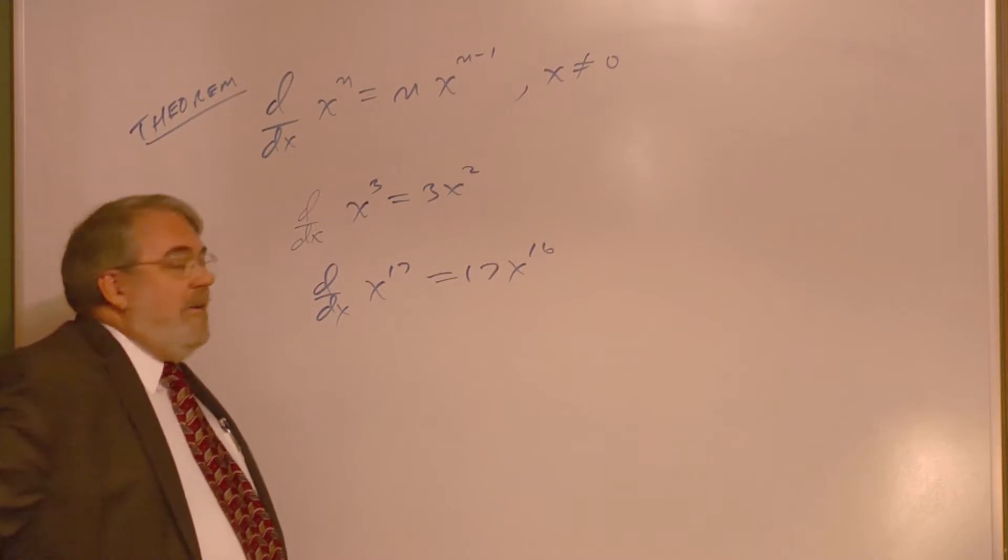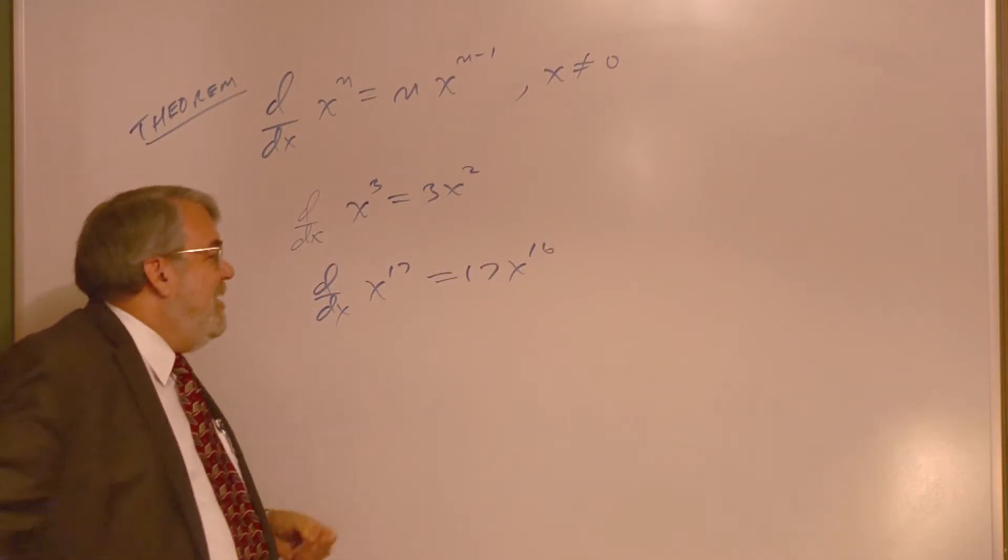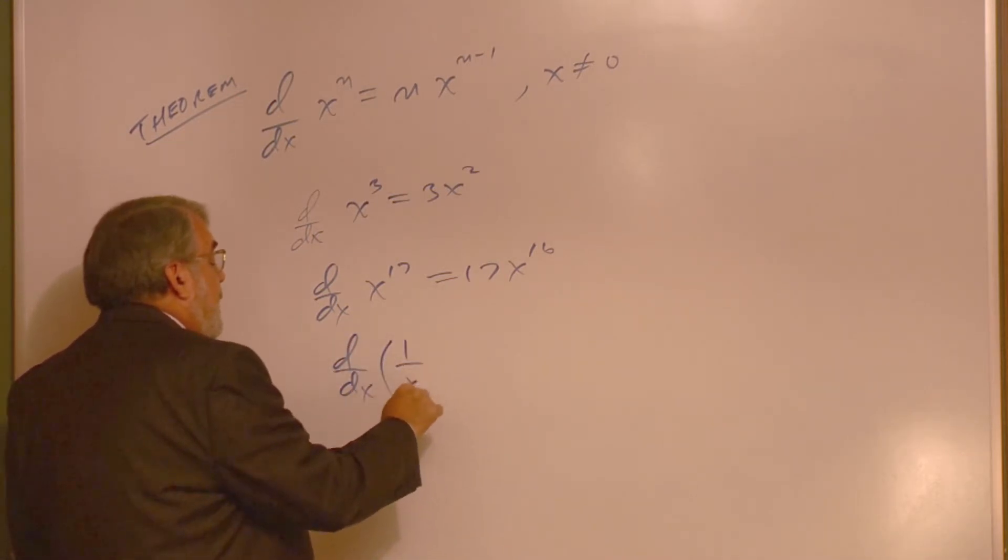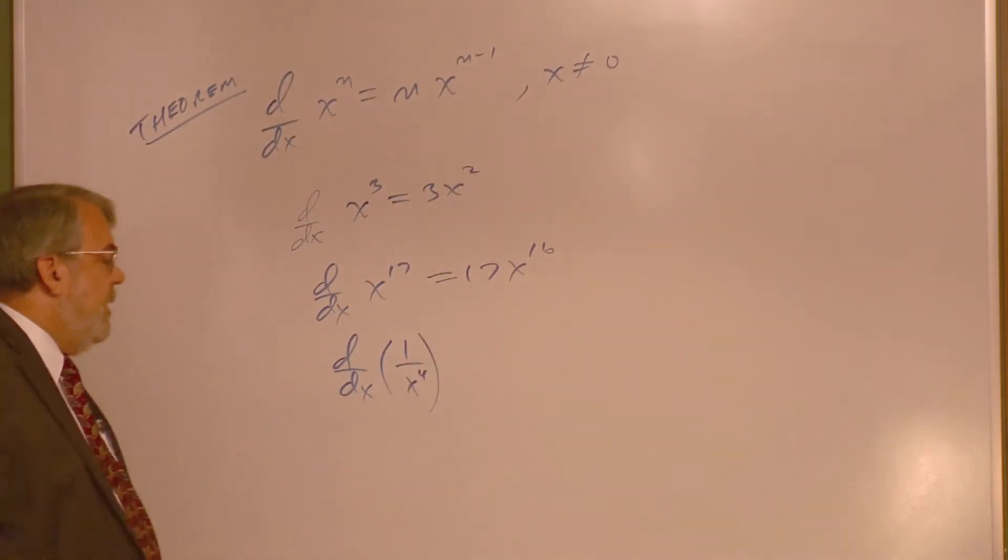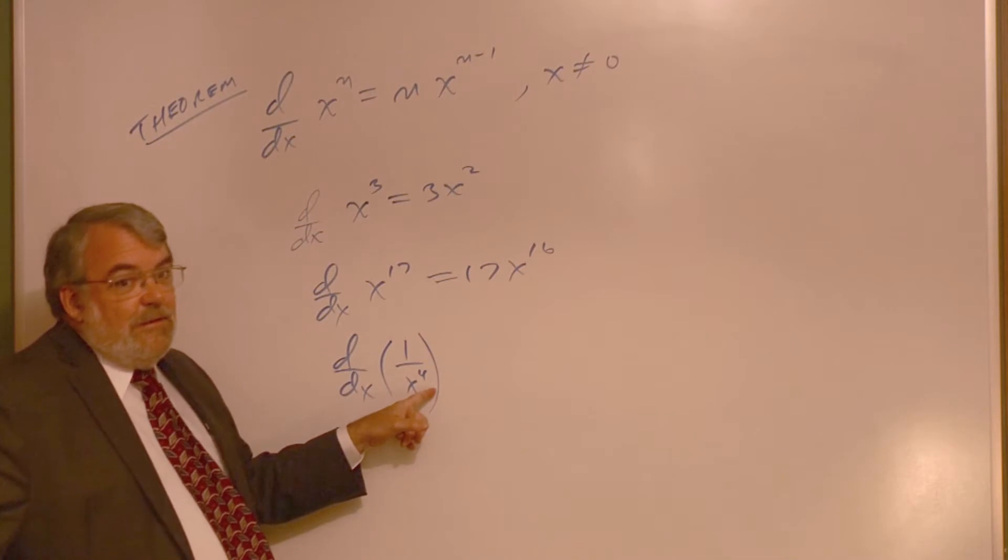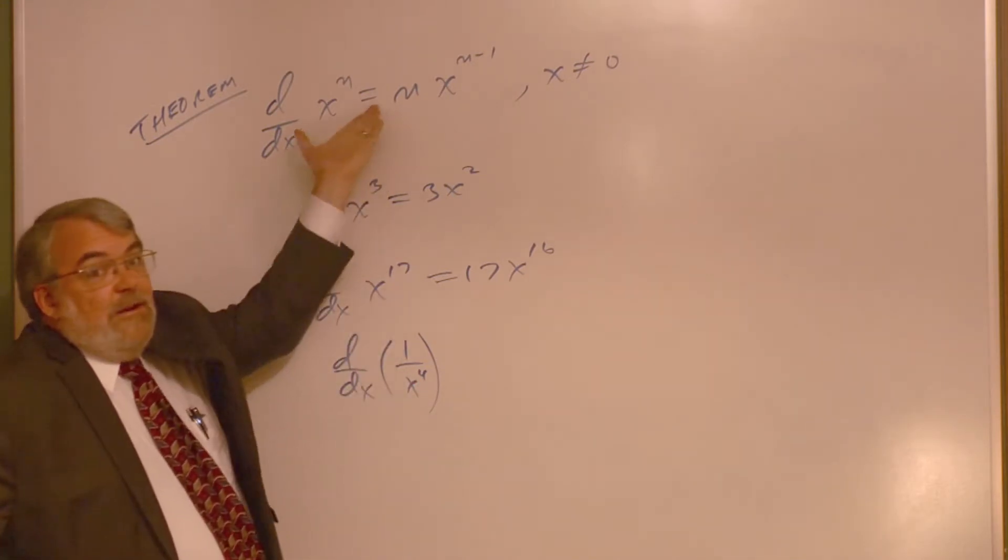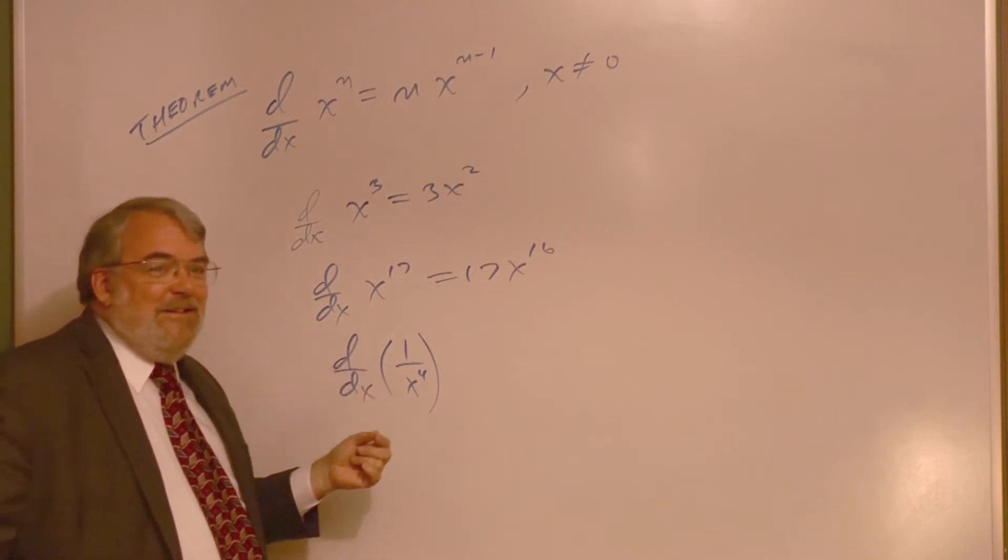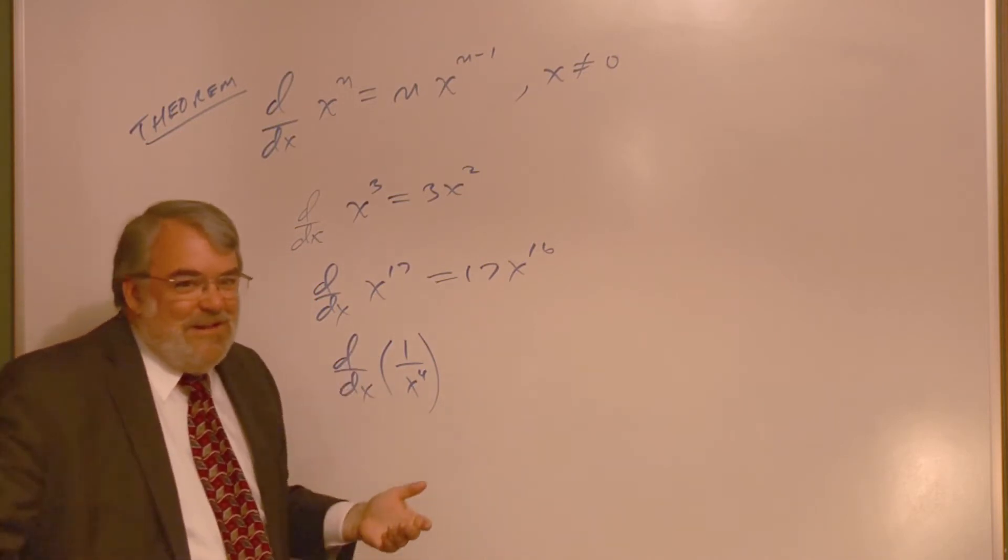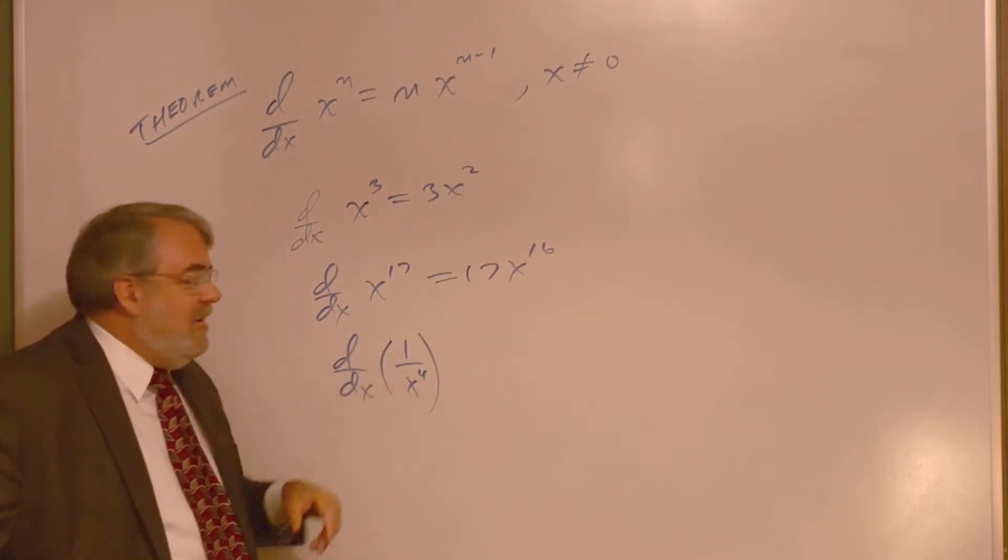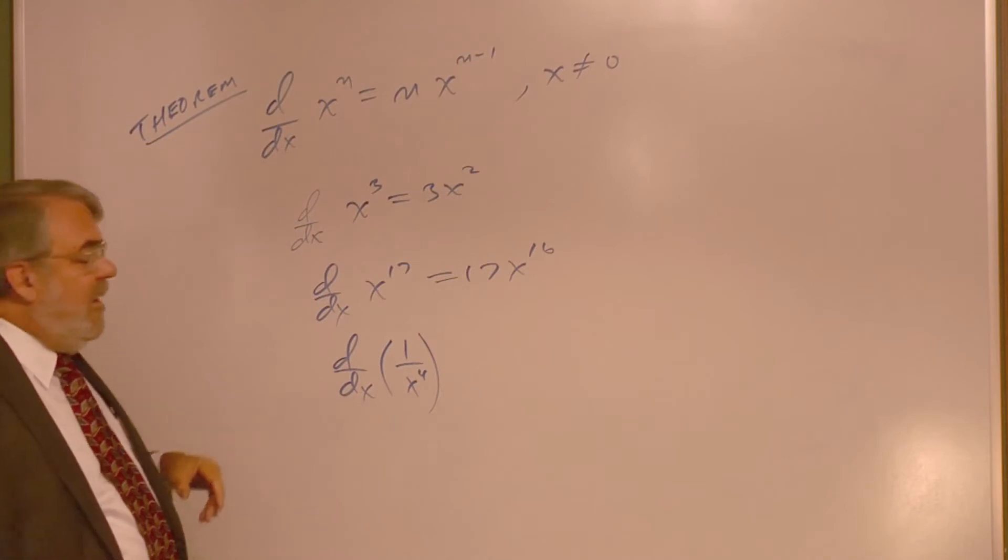But you've got to be careful. Don't over-apply it or don't over-think this stuff. For example, the derivative of 1 over x to the fourth power—it is not 1 divided by 4x to the third. This theorem doesn't handle fractions, does it? So don't apply a theorem where it's not meant to be applied. I can't say this is just 1 divided by this derivative. Doesn't work. But there's a way of working around this.